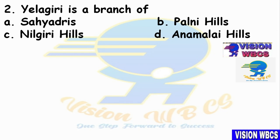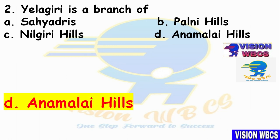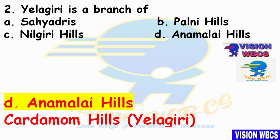Second question: Yalaagiri is a branch of which hills? Option A — Shayadris. Option B — Palani Hills. Option C — Neelgiri Hills. Option D — Annamalai Hills. The right answer is Option D: Annamalai Hills. Yalaagiri is a branch of Annamalai Hills, also called Cardamom Hills. This was a 2020 Mains question.